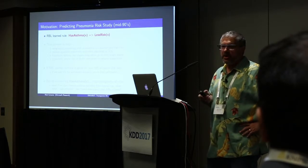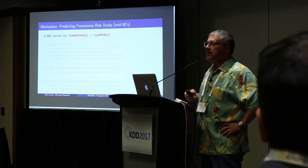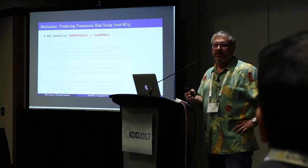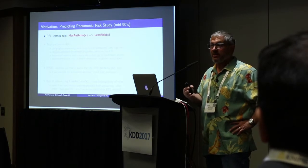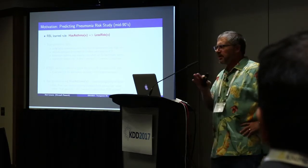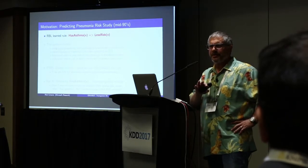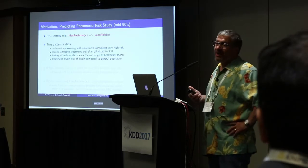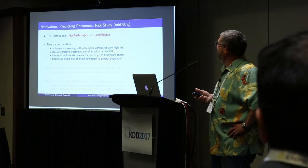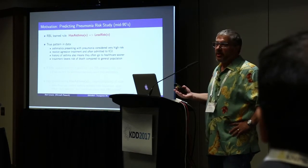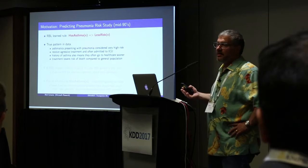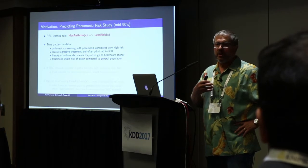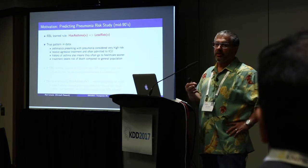A friend doing rule-based learning at a different university on the same data set learned a rule: if you have a history of asthma, you have less chance of dying from pneumonia — asthma is somehow protective for pneumonia. Now hopefully that sounds a little weird. You don't have to be a doctor to question whether that makes sense. So we asked the doctors, and they said it's probably a real pattern in the data. Asthmatics presenting with pneumonia, they consider that very high risk. They get really aggressive treatment. Asthmatics are already paying attention to how they breathe, so they're probably noticing symptoms of pneumonia earlier than other patients.